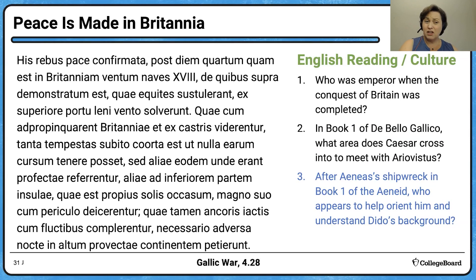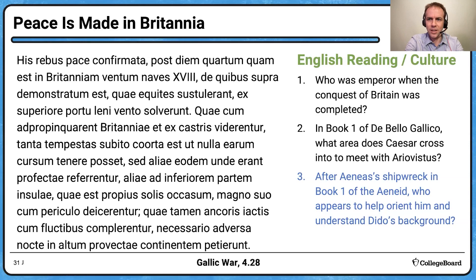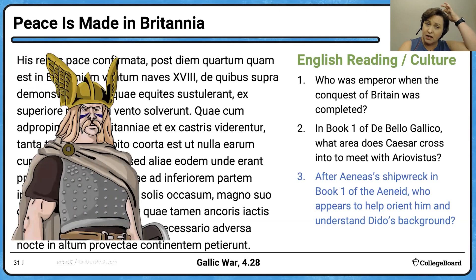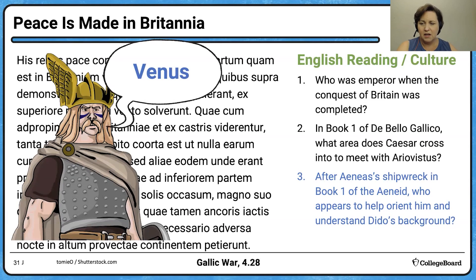Even during a De Bello Gallico short answer, you might get a question about English readings from the Aeneid. For example: after Aeneas's shipwreck in book one of the Aeneid, who appears to help orient him and understand Dido's background? She comes disguised as a Spartan huntress in the woods of Libya — this is Aeneas's mother, Venus, who often appears in the Aeneid to help her son. All you need to write is 'Venus.' Don't write a story. Just answer the question.